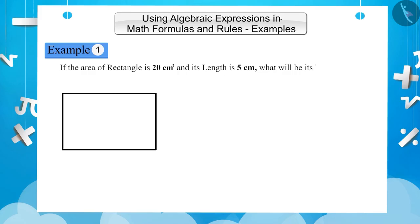Let's solve it together. The formula for the area of a rectangle is length multiplied by width. If written through an algebraic expression, the area of a rectangle will be L multiplied by B, where L represents length and B represents width.